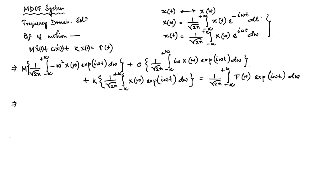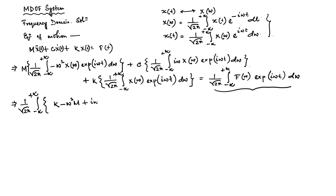Now we can simplify this equation. We take the right-hand side to the left-hand side and simplify. What we get is 1 over √(2π) times the integral from −∞ to +∞ of [(k − ω²m + iωc)·X(ω) − F(ω)]·e^(iωt) dω, and this equals zero.